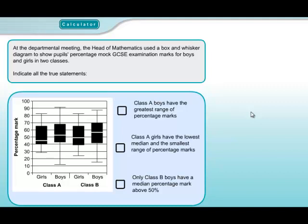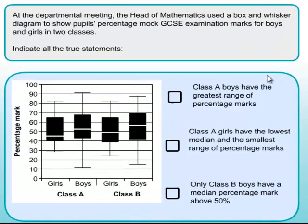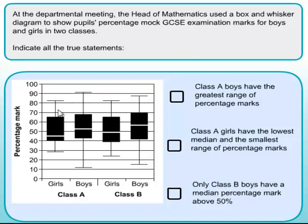Question 18. We have a box and whisker diagram — brilliant, because they're so quick and easy to score marks on. The head of maths is using box and whisker diagrams to show percentage marks for boys and girls in two classes. Statement one: class A boys have the greatest range of percentage marks. Here's class A boys. The range is the difference between the highest and lowest score. Just by eye you can see the range from biggest to smallest is clearly the greatest in this diagram. So yes, that one's true.